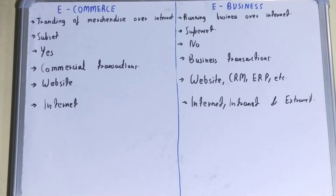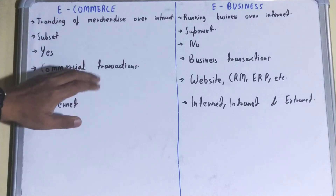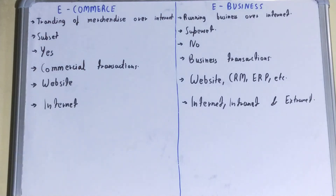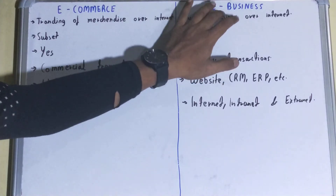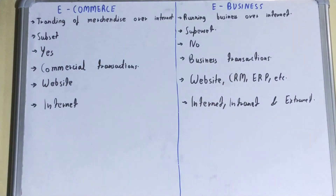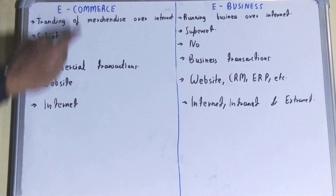In terms of what they carry out: e-commerce involves commercial transactions where money exchange or invoice exchange is involved — a proper commercial transaction. E-business, on the other hand, involves broader business transactions.